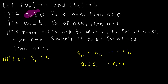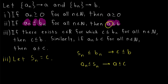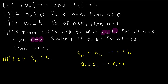To summarize: if every term of a convergent sequence is at least zero, then its limit is at least zero. If every term of one convergent sequence is less than or equal to every term of some other convergent sequence, then their limits have that same relation — the limit of the smaller sequence is less than or equal to the limit of the greater sequence. And if every term of a convergent sequence is greater than or equal to some real number c, then its limit is also greater than or equal to c, and similarly if every term is less than or equal to c, then its limit is less than or equal to c.